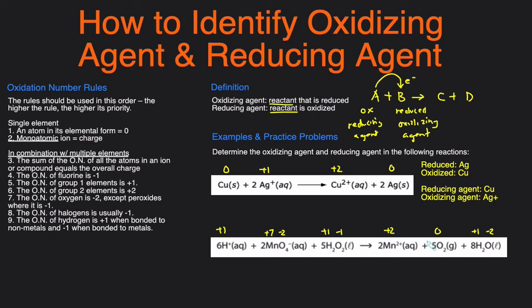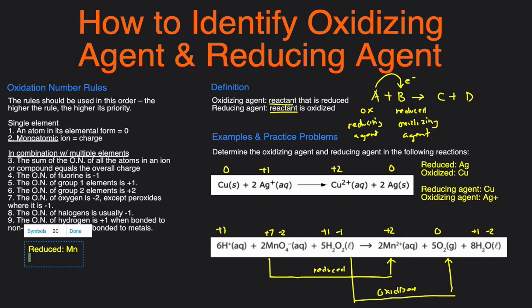Then we can determine which element is oxidized and reduced by comparing the oxidation numbers. So you can see that Mn went from seven to positive two, so that was a decrease in oxidation number. That means it was reduced. And then O went from negative one to zero, so that is oxidized. So let's rewrite that over here. The element reduced is Mn and then the element oxidized is O.